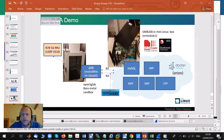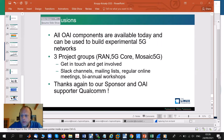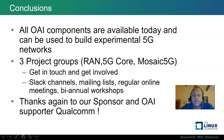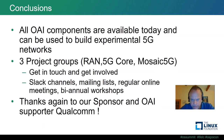In conclusion, all of the OAI components are available today and can be used to build an experimental 5G network like the one I just showed you. Today we animate three project groups: Radio Access Network, 5G Core, and the new Mosaic 5G group within Open Air Interface. I'm encouraging everybody to get in touch and get involved — we have Slack channels, mailing lists, regular online meetings, and biannual workshops too. I'd also like to thank again our sponsor and strong OAI supporter, Qualcomm.